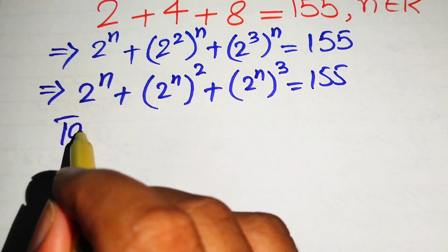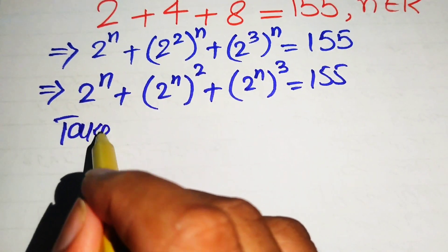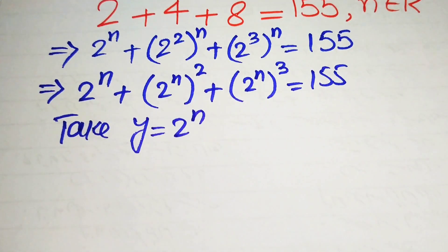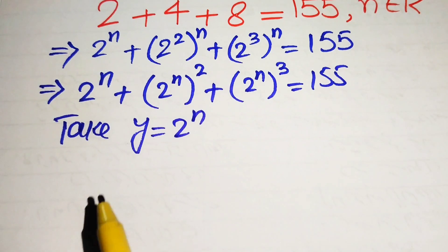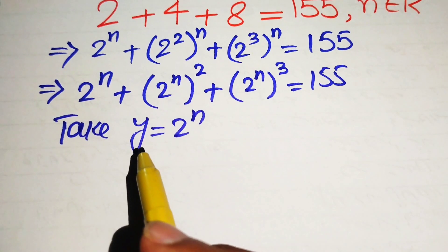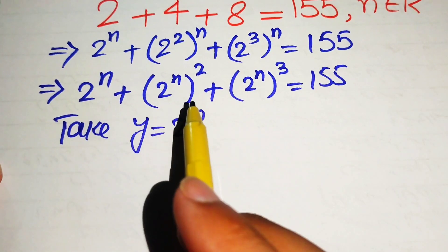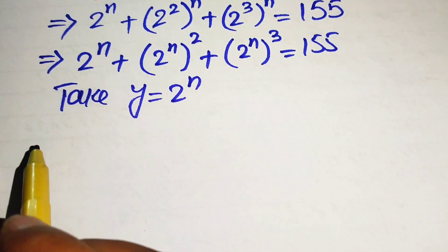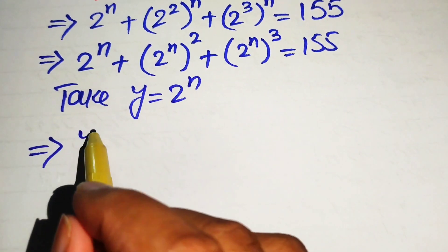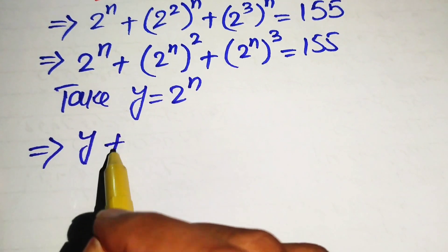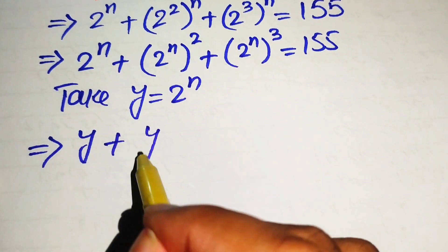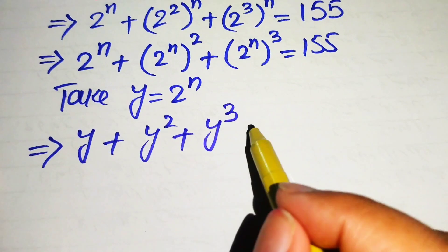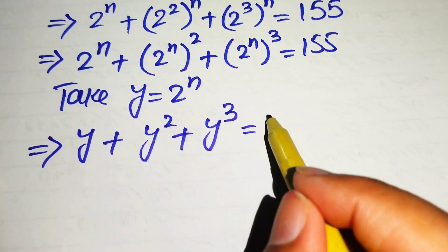We can see that 2 to the power of n is present in each term, so we substitute y equals 2 to the power of n. Our equation then becomes y plus y squared plus y cubed equals 155.